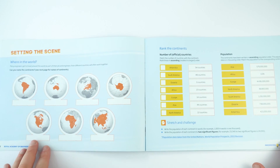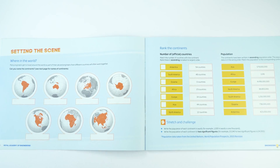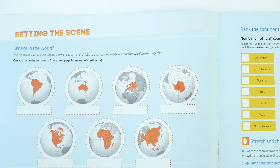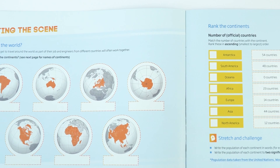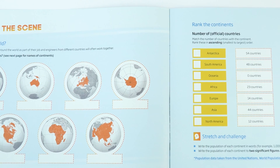In the main booklet for 'Engineering a Better World' there are some activities that you can really use to set the scene with your students. This is to make them more aware of some of the global issues that the world is facing.